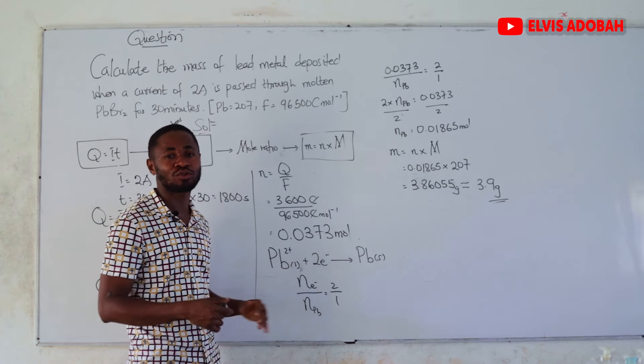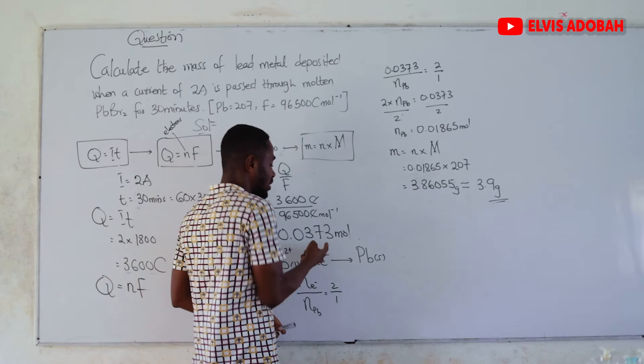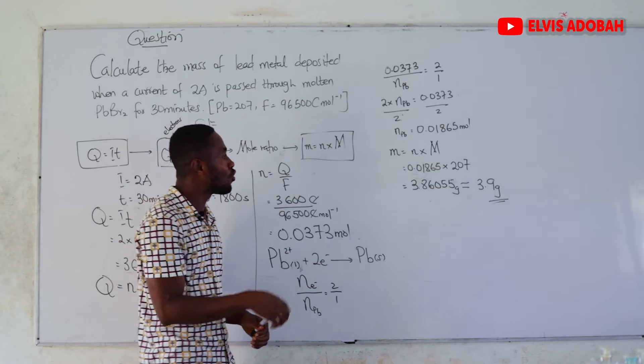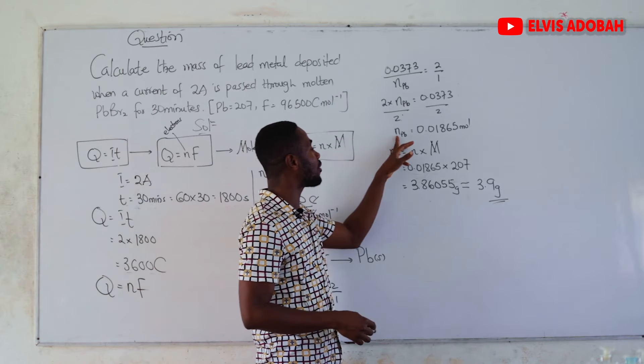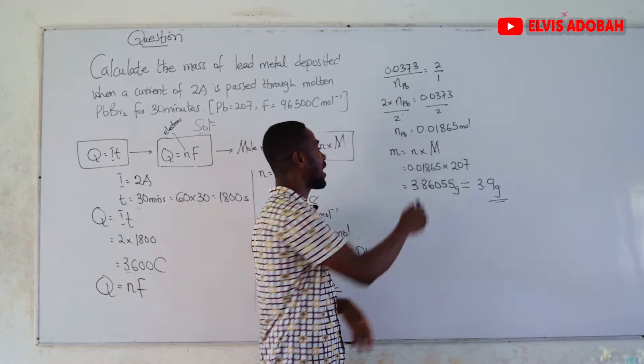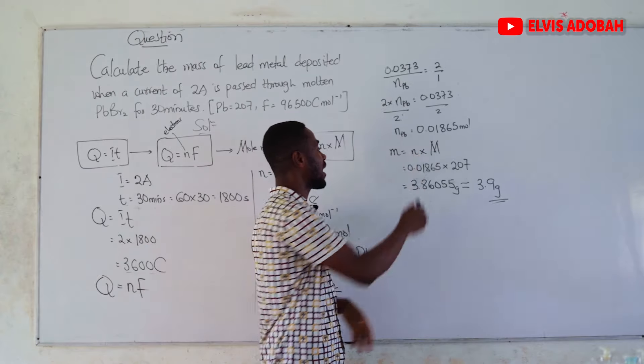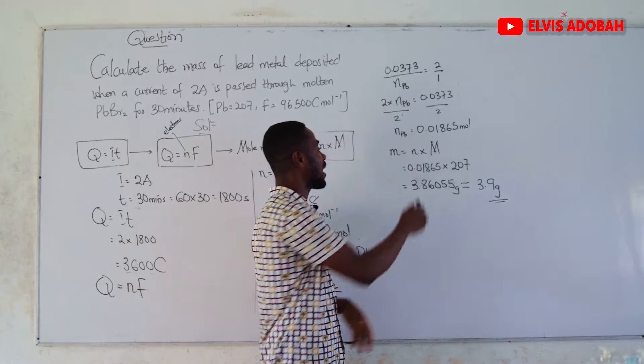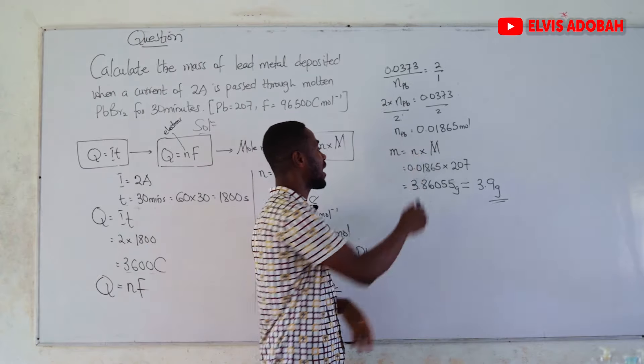Then, you will use mole ratio to compare the amount of the substance to the amount of electrons. After getting that, since we have already calculated for the amount of electrons, we can find the amount of the metal deposited at the cathode. From there, we can use our amount times molar mass to calculate our mass. Thank you.